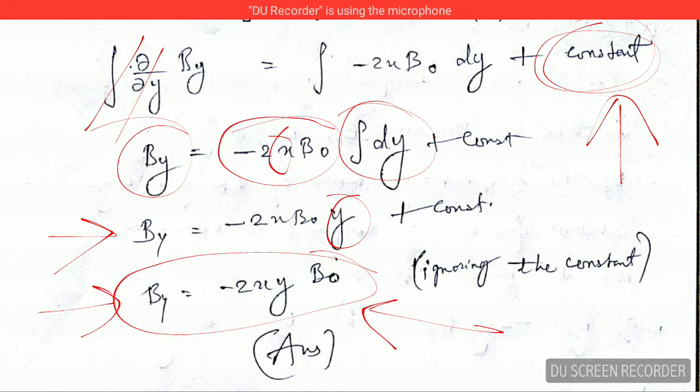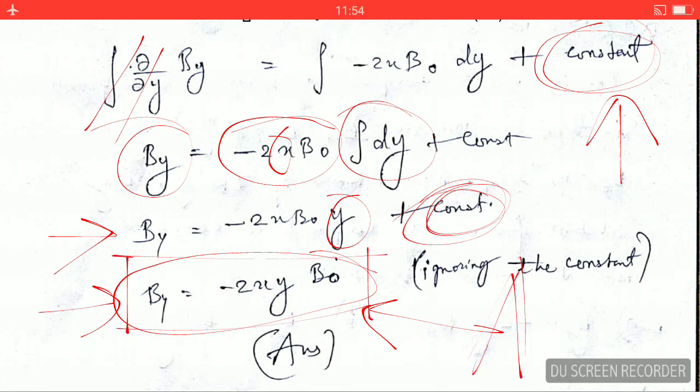Why have we ignored the constant? Because there is no way here to determine the constant because they have not provided us any boundary conditions or initial conditions to find out the constant. So we can ignore the constant at this point. On ignoring the constant, we get this equation for By and that's our answer.